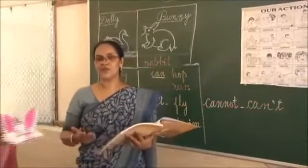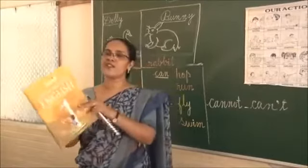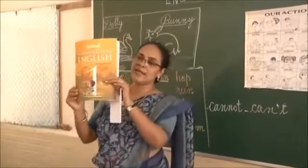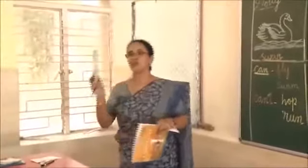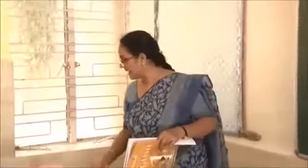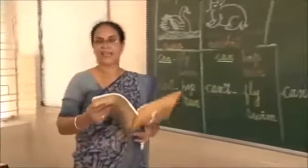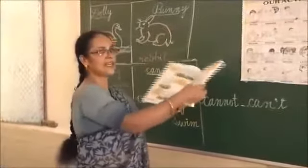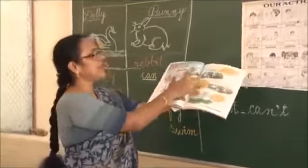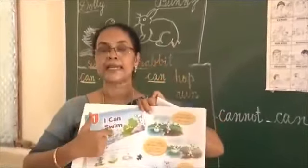Now I will explain to you while reading the lesson. I want you all to take your English textbook. This is your English textbook. Also, you have to take your pencil, and your homework book, and then your eraser. Keep ready. And meanwhile we will read the lesson. Now take your book. Page number 2. English, page number 2. You can see lesson 1: I can swim.